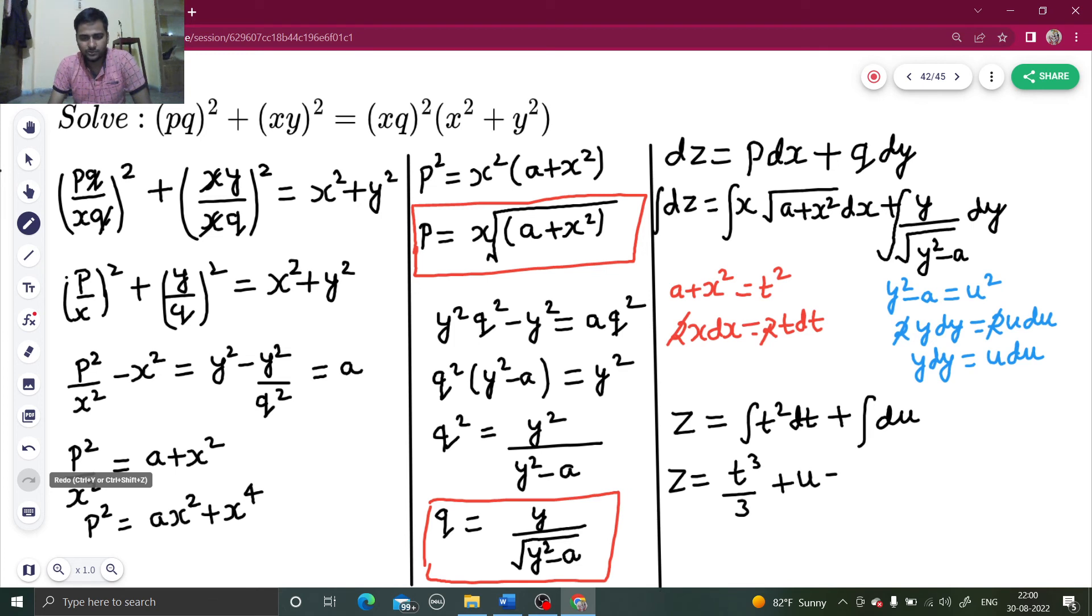And from the denominator you are getting the square root of U squared, which is U. U and U cancel. So Z equals T cubed by 3 plus U plus C.